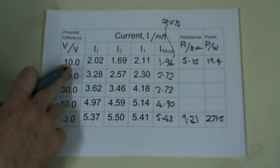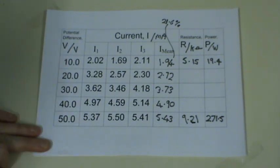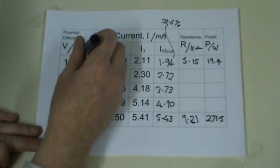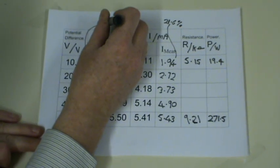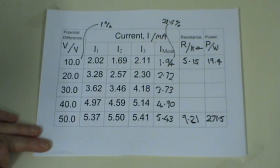The value is 10, so 0.1 divided by 10 multiplied by 100 gives us a 1% uncertainty.